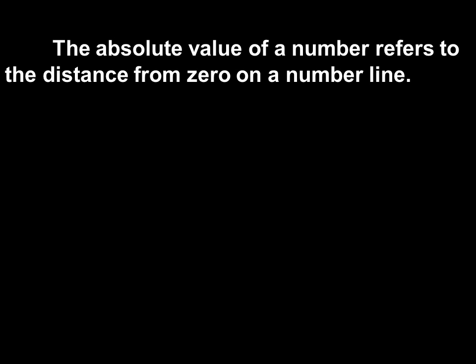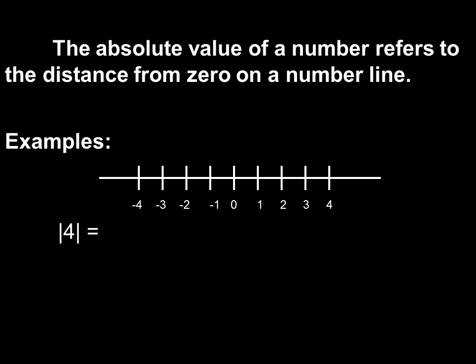Always remember that the absolute value of a number refers to the distance from 0 on a number line. We have the absolute value of 4 as an example. 4 is 4 units away from 0, therefore its absolute value is 4.